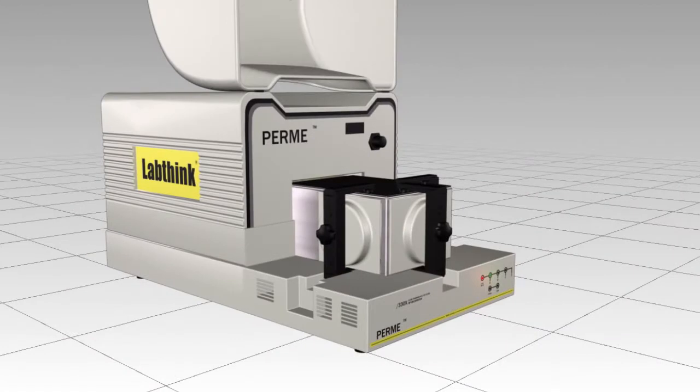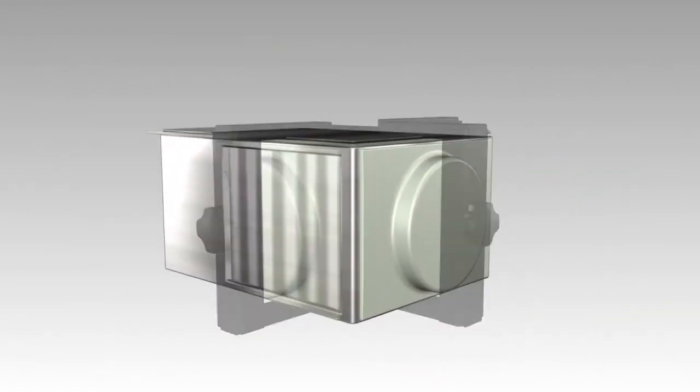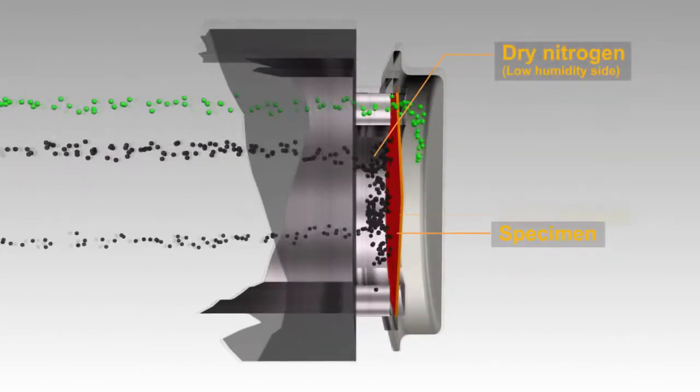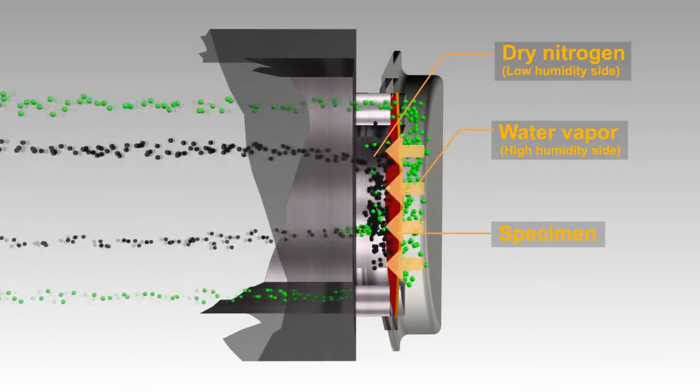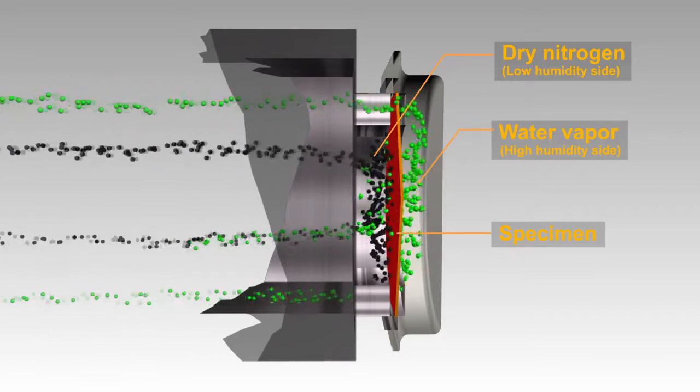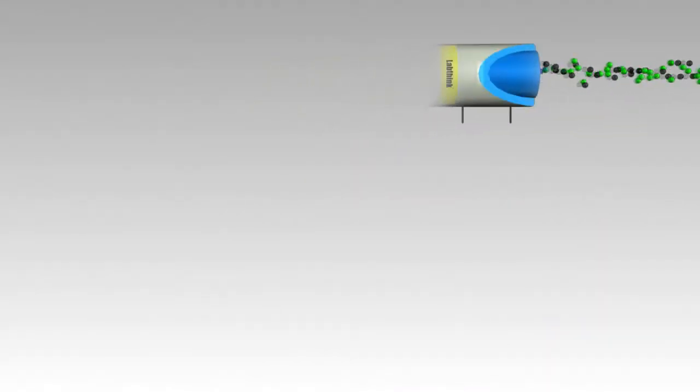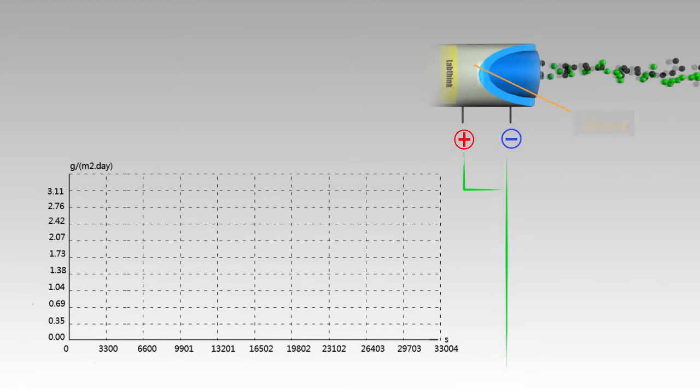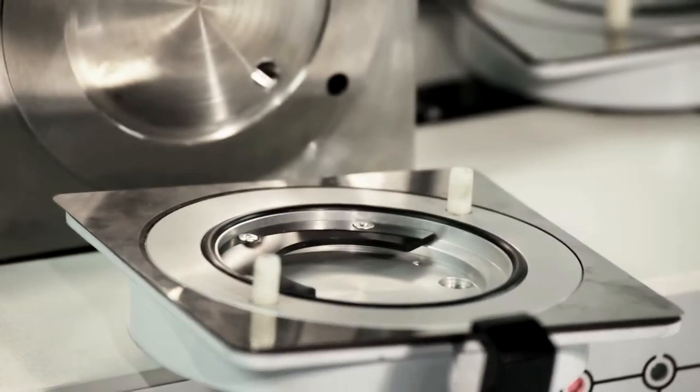W3330 works by firstly establishing a humidity difference across the two sides of the testing specimen. Then the water vapor molecules pass through the specimen from the high humidity side to the low humidity side and the diffused water vapor molecules enter into the electrolytic sensor and electrolyze with phosphorus pentoxide proportional current.